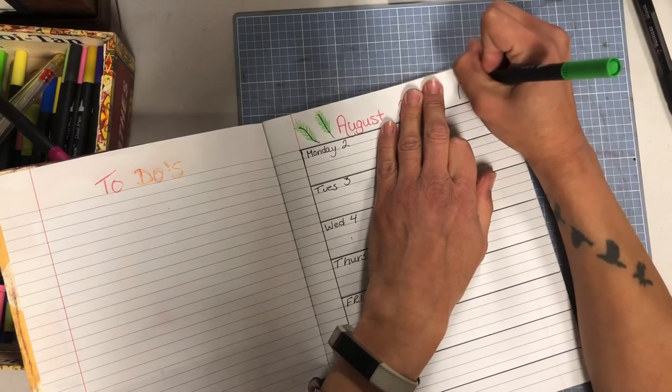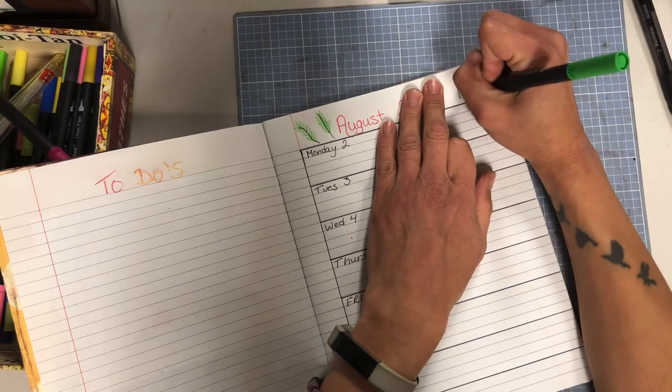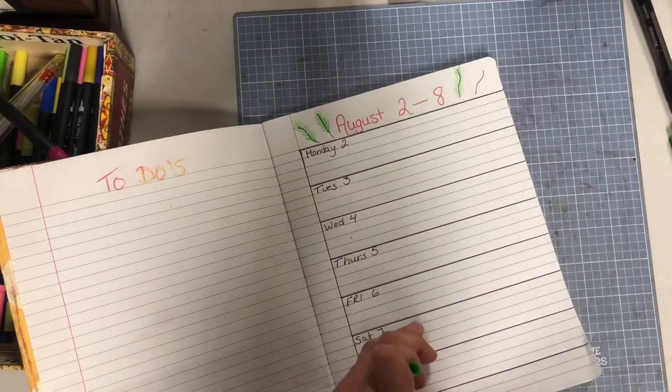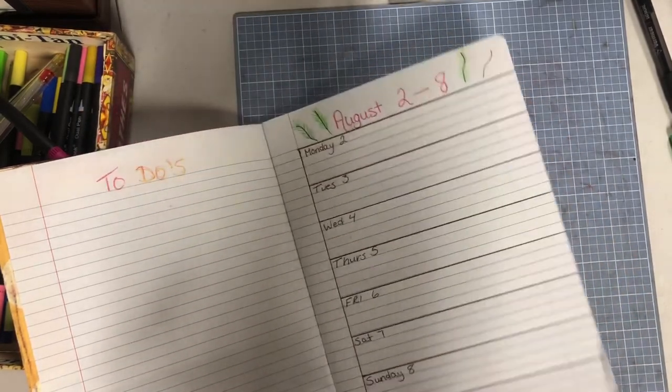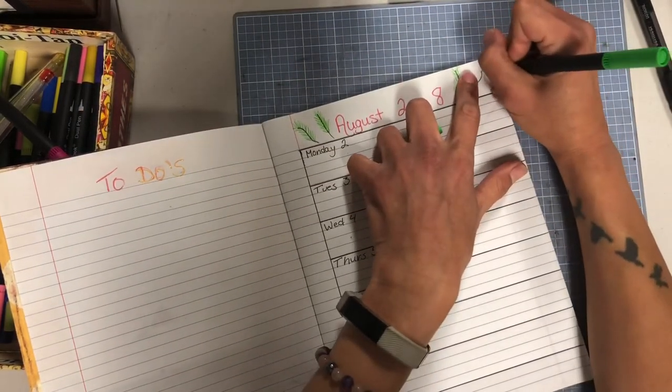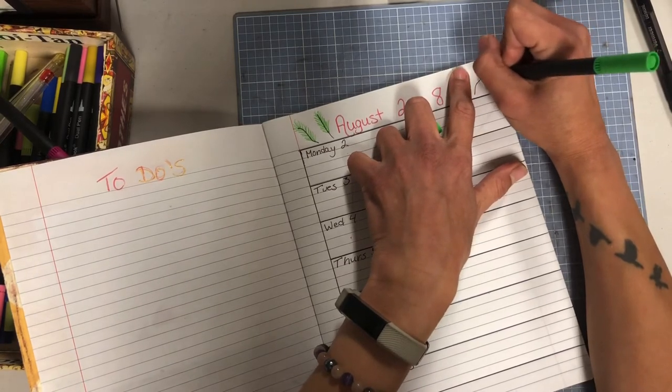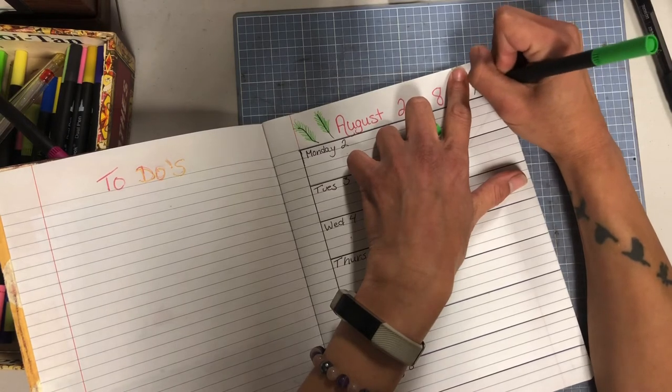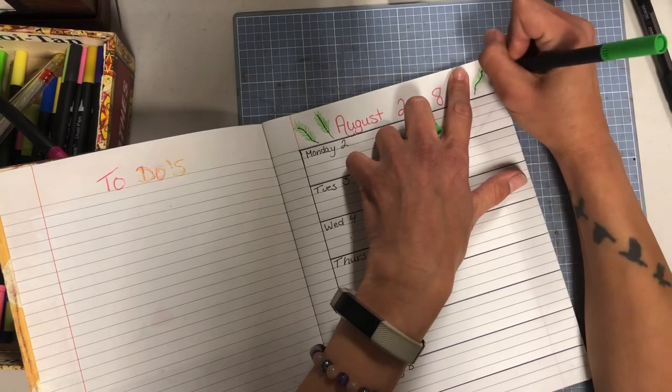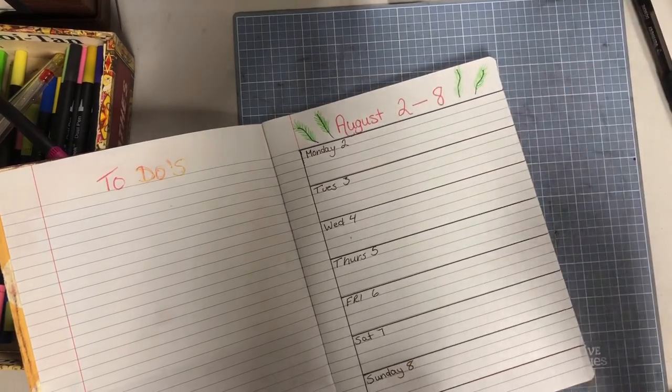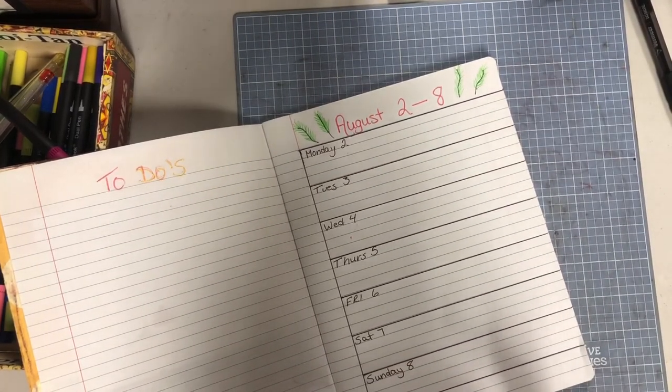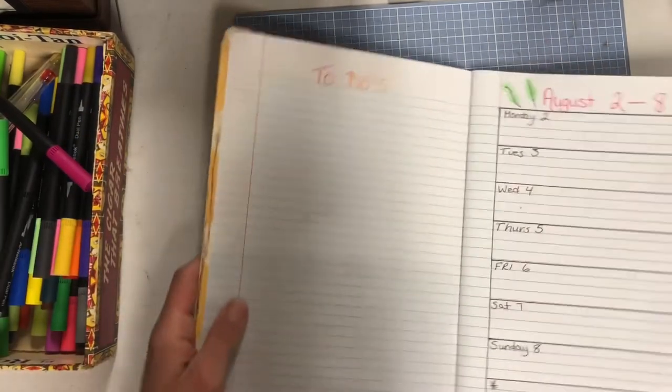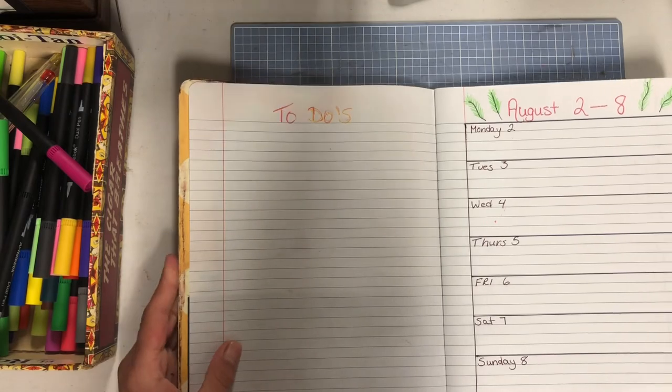And the thing is, is if I fall off the wagon one week and I don't make my calendar, well who cares? Then I just start into the week I'm on and I don't have to feel bad that I've wasted my planner by not writing in it. Because this book starts where you're at, and who doesn't love that? So there you go, I am all set to mark in what I'm up to from August 2nd to the 8th.